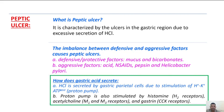How does gastric acid secrete? HCl is secreted by gastric parietal cells due to stimulation of the proton pump, also known as hydrogen-potassium ATPase. This proton pump is also stimulated by histamine H2 receptors, M1 and M3 receptors, and cholecystokinin receptors which stimulate gastrin.